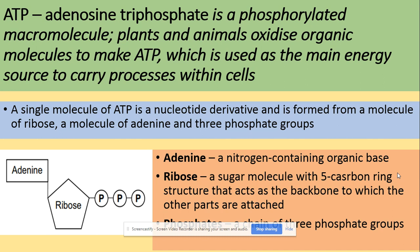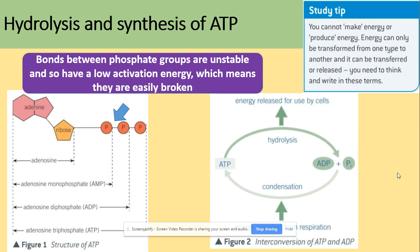ATP — adenosine triphosphate — is a phosphorylated macromolecule. Plants and animals oxidize organic molecules to make ATP, which is then used as the main energy source to carry out processes within the cells. A single molecule of ATP is a nucleotide derivative and is formed from a molecule of ribose, a molecule of adenine, and three phosphate groups.